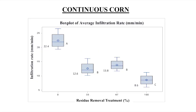We looked at the infiltration rate using single ring infiltrometers and measured the differences in rates of water infiltration over a period of time. In the corn after corn, the zero percent removal had about two and a half times greater infiltration rate — about 22 millimeters per minute — versus the 100 percent at nine millimeters per minute. So it was essentially about an inch per minute versus about a third of an inch per minute, about a two-thirds reduction because we took off the residue.